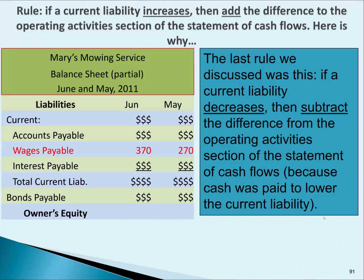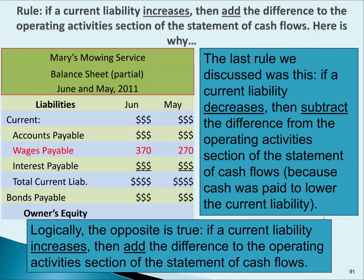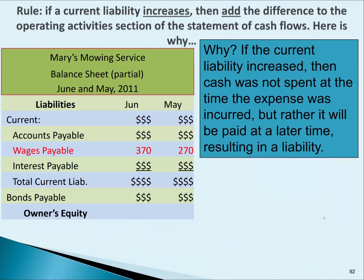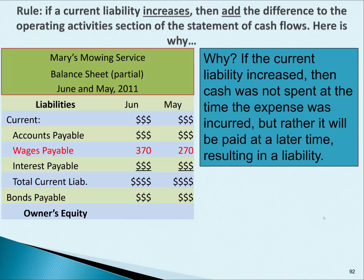Logically, the opposite is true for this rule: if a current liability increases, then add the difference — the arrows go the same way. On the next slide or two, we'll show a journal entry to make it easier to understand. If the current liability increased for wages payable, then cash was not spent at the time the expense was incurred. Rather, it will be paid at a later time, resulting in a liability — wages payable.